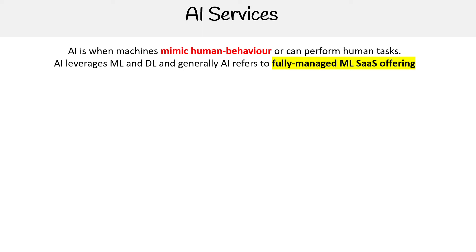I don't know why Google decided to call Vertex AI with 'AI' in it, because it's really just for ML and deep learning. Anytime we just say AI, people think fully managed services. But these are the fully managed services that Google offers — they're not part of Vertex AI, so they're just outside of it.